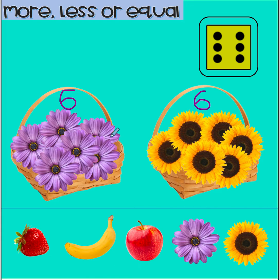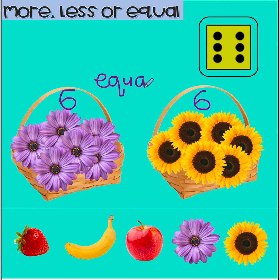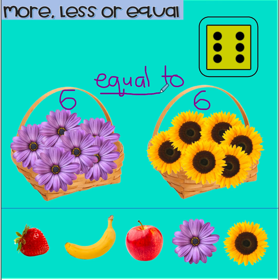Boys and girls, what can you see? That's right! Both baskets have the same amount or number of flowers — six daisies and six sunflowers. They're the same. They're equal. Six is equal to six. Great job, boys and girls. Now it's time for us to practice. Thank you for listening.